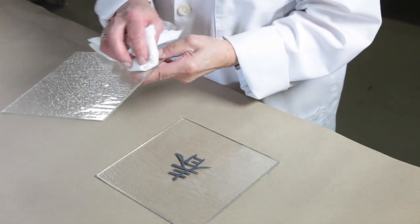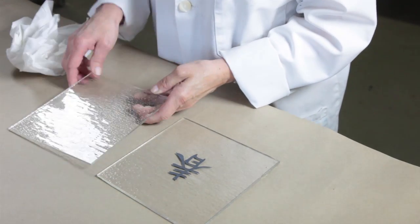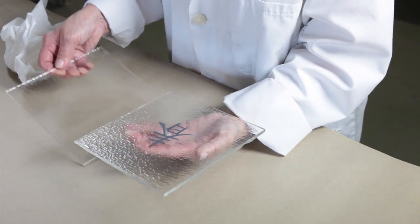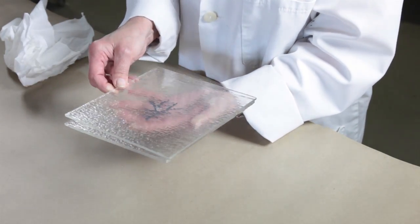If you plan to full fuse your piece, fire the screen printed layer at a lower temperature and then cap it with clear glass and bring it to a full fuse temperature.